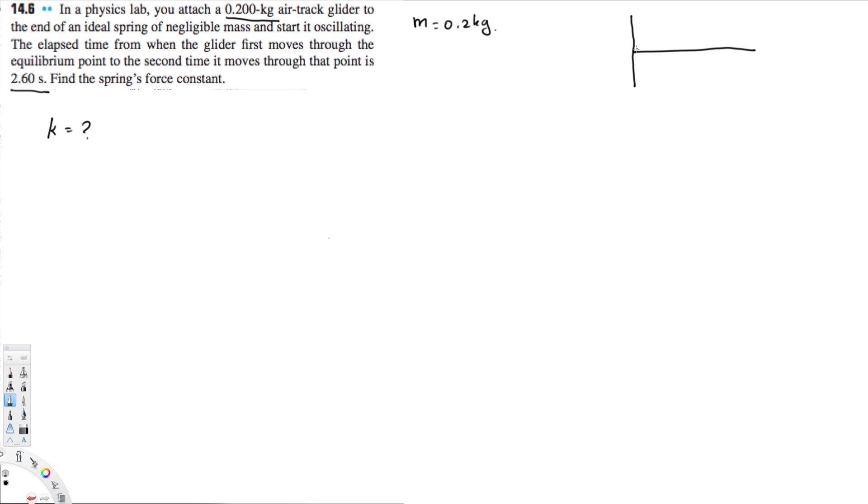They are saying the elapsed time from when the glider first moves through the equilibrium point—so this is the equilibrium point right here—it takes from here to here 2.60 seconds. So this is actually half of the cycle. So we have the full cycle right here.